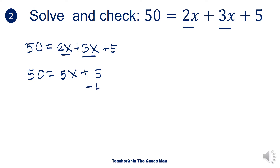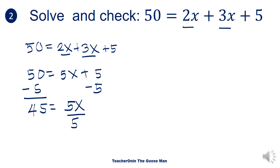I'll subtract both sides by 5, so I have 45 is equal to 5x. Then, using the MPE or multiplication property of equality, I'll divide both sides by 5. So I have now 9 is equal to x, or x is equal to 9.